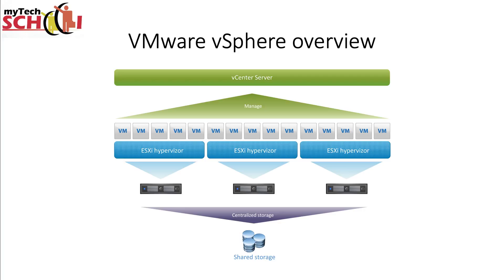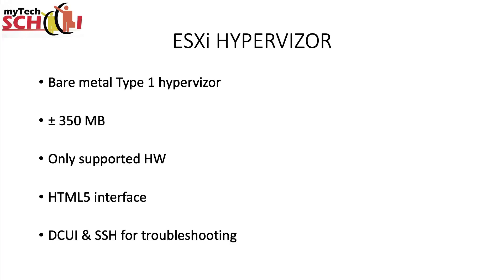Now that we have covered the very basics, let's have a look at VMware vSphere. In every vSphere environment there are two essential components: the ESXi hypervisor that runs the virtual servers, and vCenter server that manages the entire environment. The ESXi hypervisor is a Type 1 hypervisor installed directly on the physical server. It is a tiny piece of software — the installation image is just 350MB. Since the ESXi hypervisor is an enterprise-class hypervisor, you can install it only on supported hardware. From a management perspective, the entire management is done through an HTML5 interface, and there is DCUI — the directly connected user interface — for initial configuration and troubleshooting, and you can use SSH for troubleshooting the system or command-line operations.